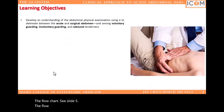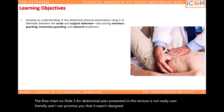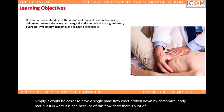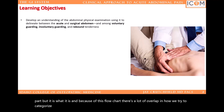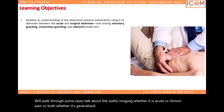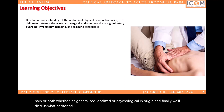The flow chart on slide 5 for abdominal pain presented in this lecture is not really user friendly, and I can promise you it wasn't designed by a surgeon. It would be easier to have a single pain flow chart broken down by anatomical body part. But it is what it is, and because of this flow chart there's a lot of overlap in how we try to categorize patients with different types of abdominal pain. We'll walk through some cases, talk about the useful imaging, whether it is acute or chronic pain or both, whether it's generalized, localized, or psychological in origin, and finally we'll discuss what peritoneal signs are and what causes peritonitis.